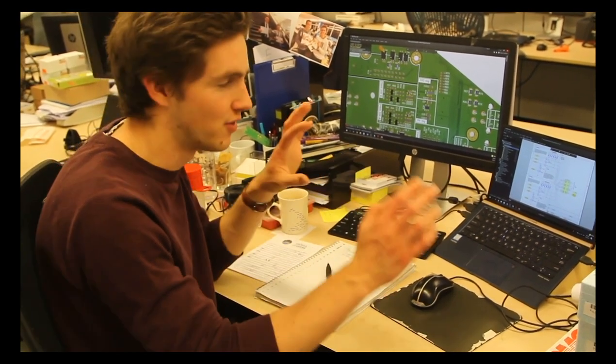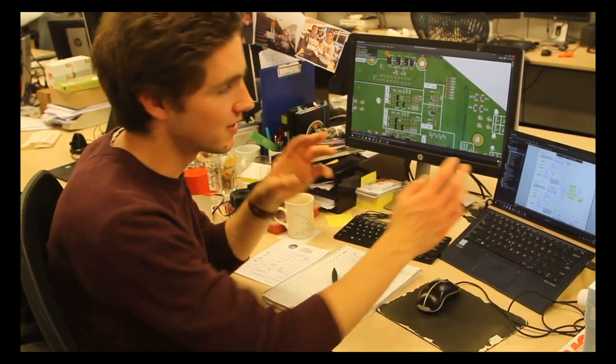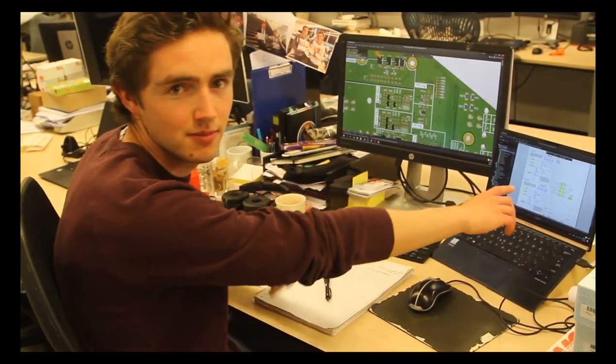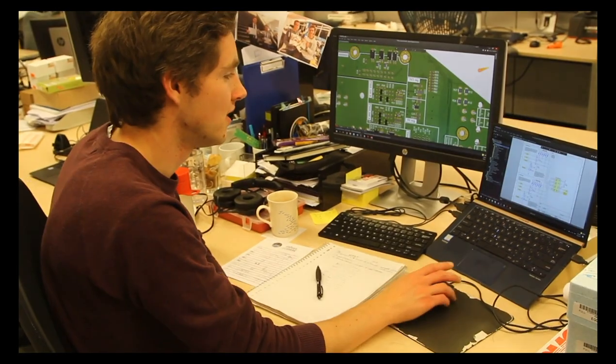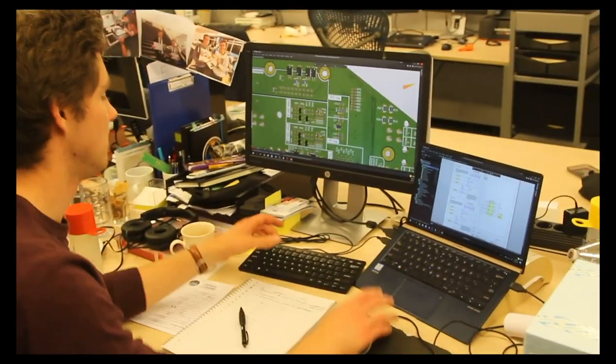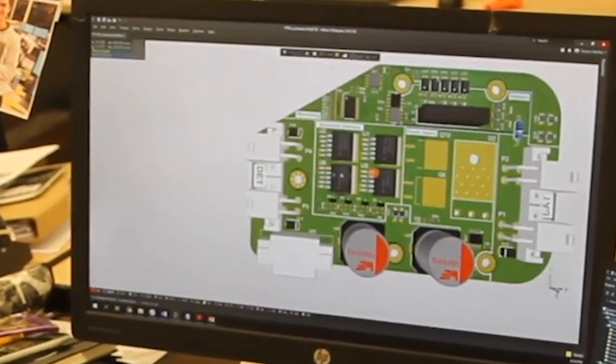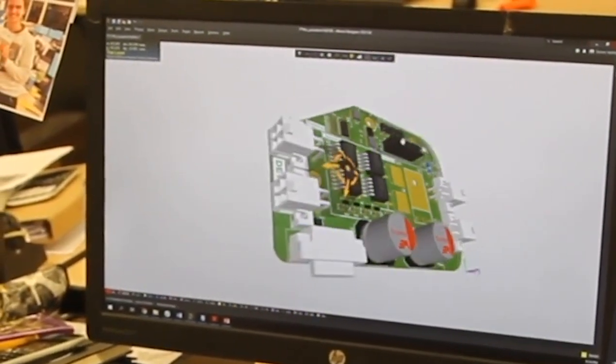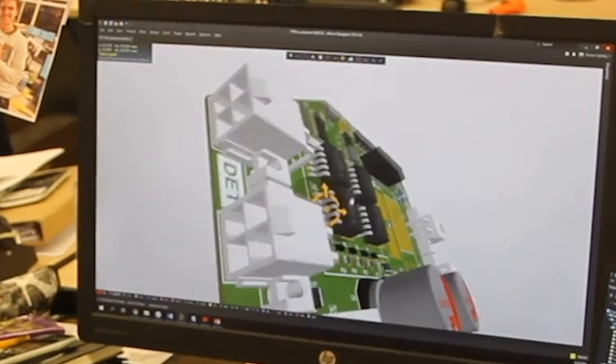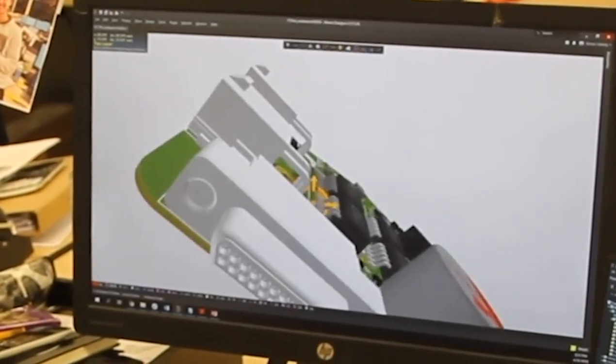So the first step is to know what you want, to make an architecture of the different things you want on a PCB. Then you put it in the schematics in Altium, the software that we use. And from the schematics, you create a PCB which looks like this. You place all the components on there, route all the traces, mounting holes and everything else.